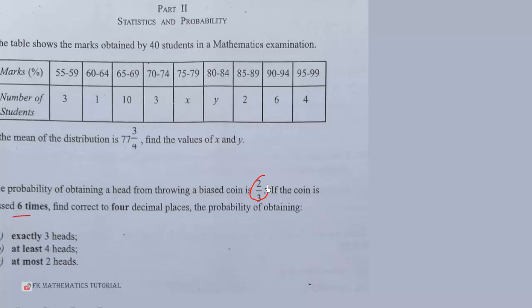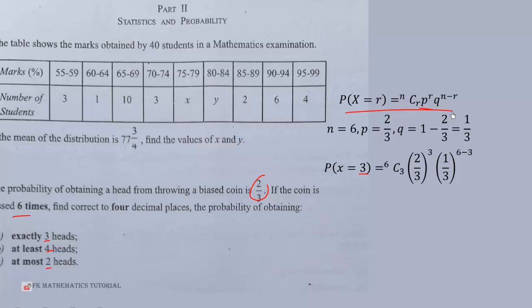This is given by P(X=r) equals nCr times p^r times q^(n-r). We are to find exactly 3 heads, so in this case X equals 3. We substitute into this formula to get 6C3 times (2/3)^3 times (1/3)^(6-3). This will simplify to give us 0.2195 correct to four decimal places as required.